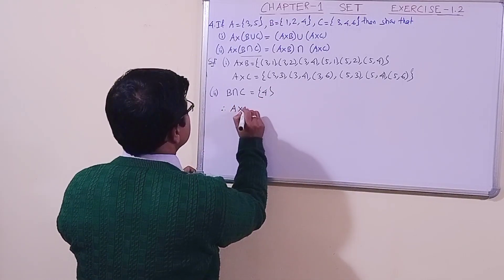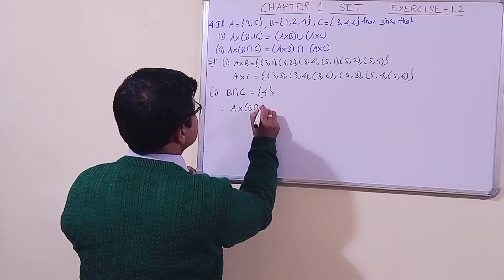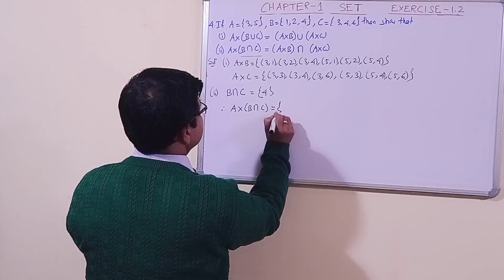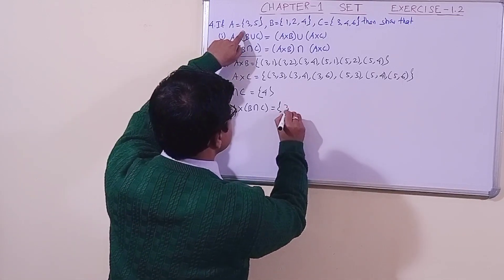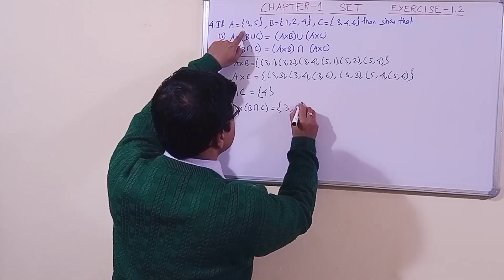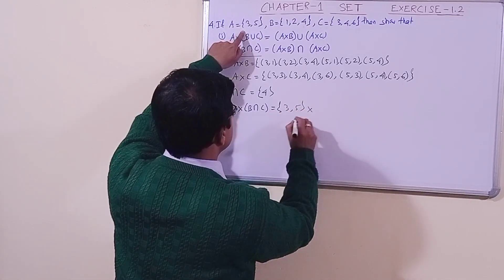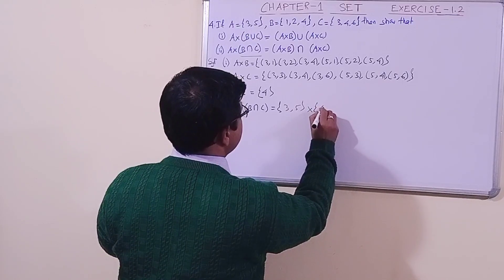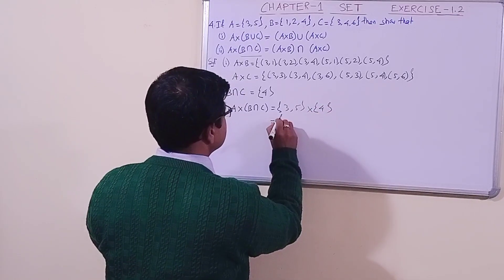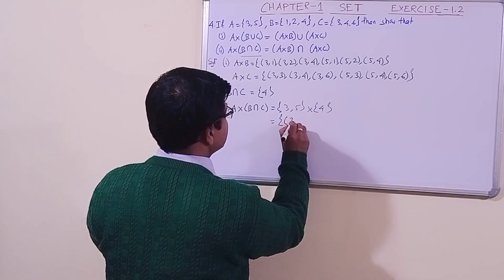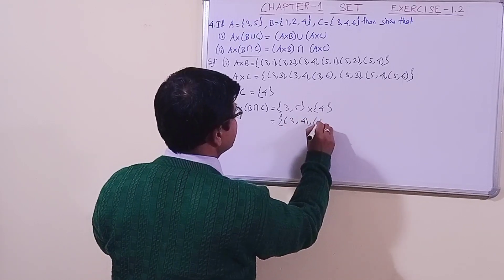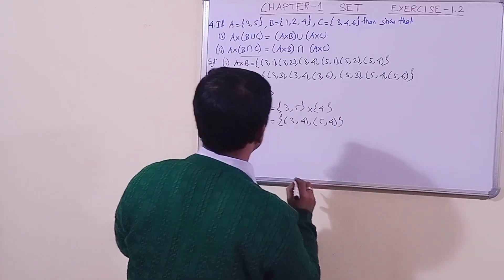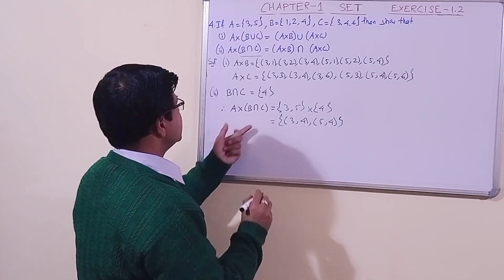For the left-hand side: A cross (B intersection C). Set A is {3, 5} and B intersection C is {4}. So the ordered pairs are (3,4) and (5,4). The left-hand side is done.